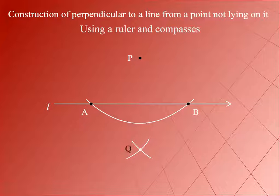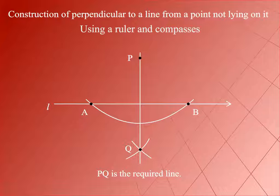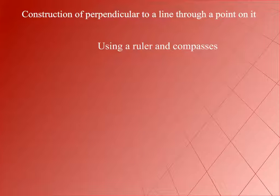Join PQ and produce it in both directions to form the line PQ. Then the line PQ is the required perpendicular line.